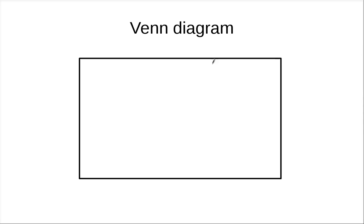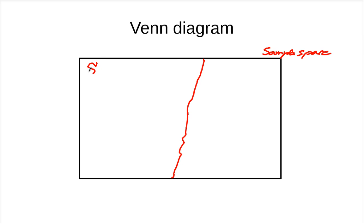We can draw a Venn diagram. This is the sample space of all emails, and this sample space is divided into two subsets: one is S, the event that a random email is spam, and another is H, the ham subset. And we know there is another event C, which is that the email contains the word cheap — it might look like this.